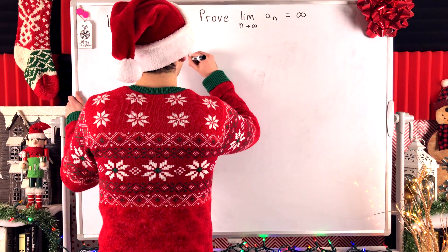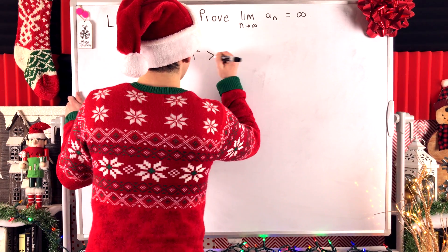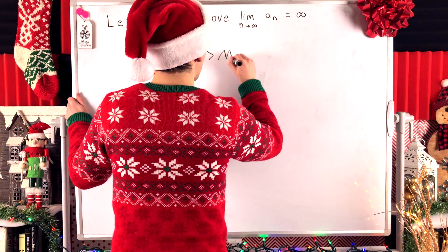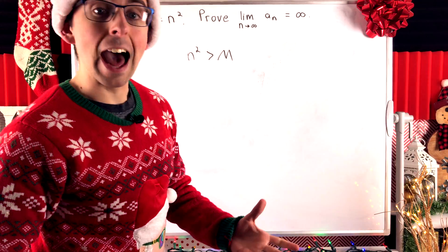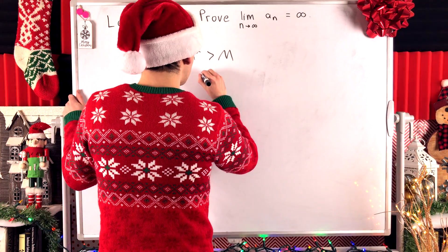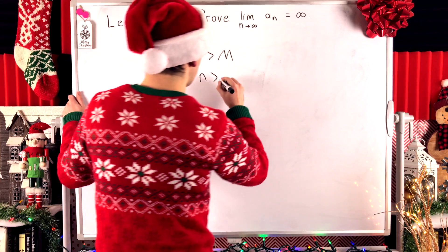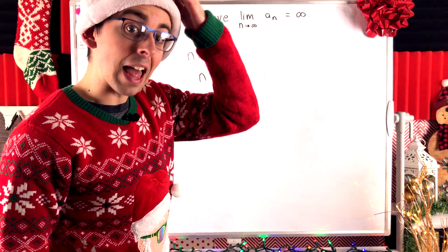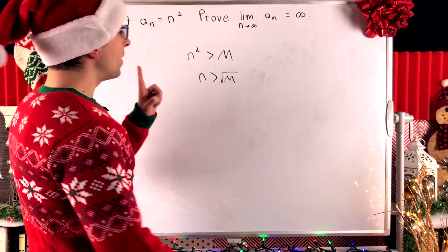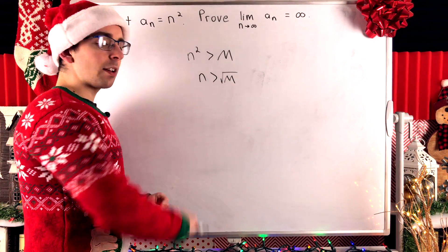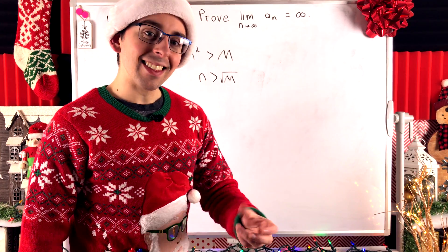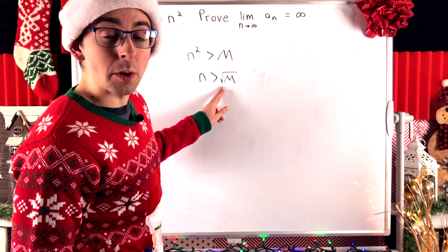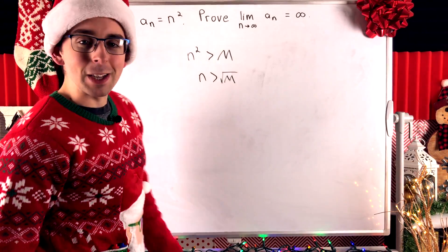The idea is: for any arbitrary positive number, we want the terms of our sequence, which are of the form n squared, to be greater than that real number — say m. Now if n squared is greater than m, taking the square root of both sides, n must be greater than the square root of m. So given any arbitrary positive number m, the nth term of our sequence for all n greater than the square root of m will be greater than m.